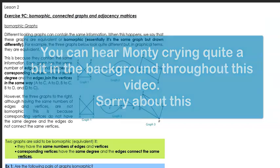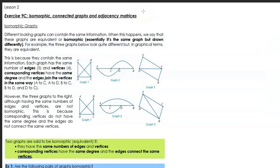The first characteristic we're going to look into is what's called an isomorphic graph. Different looking graphs can contain the same information and when this happens we say that these graphs are equivalent by the word of isomorphic. To morph is to change from one way to another while still being the same. It just says here essentially it's the same graph but drawn differently. For example we see these three different graphs here and despite being drawn differently and looking differently, in graph terms they're technically the same. They are equivalent.